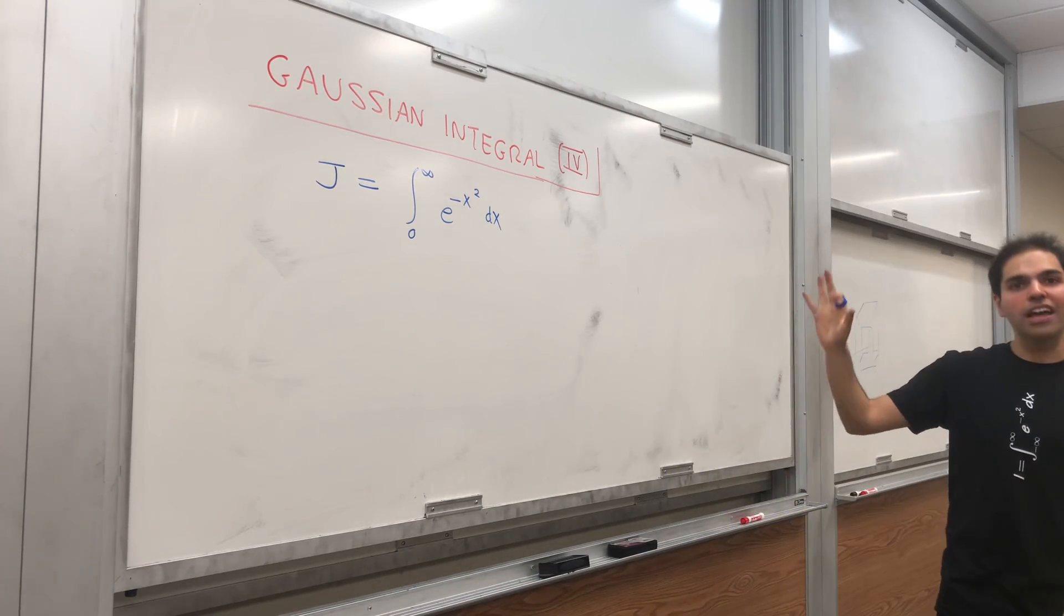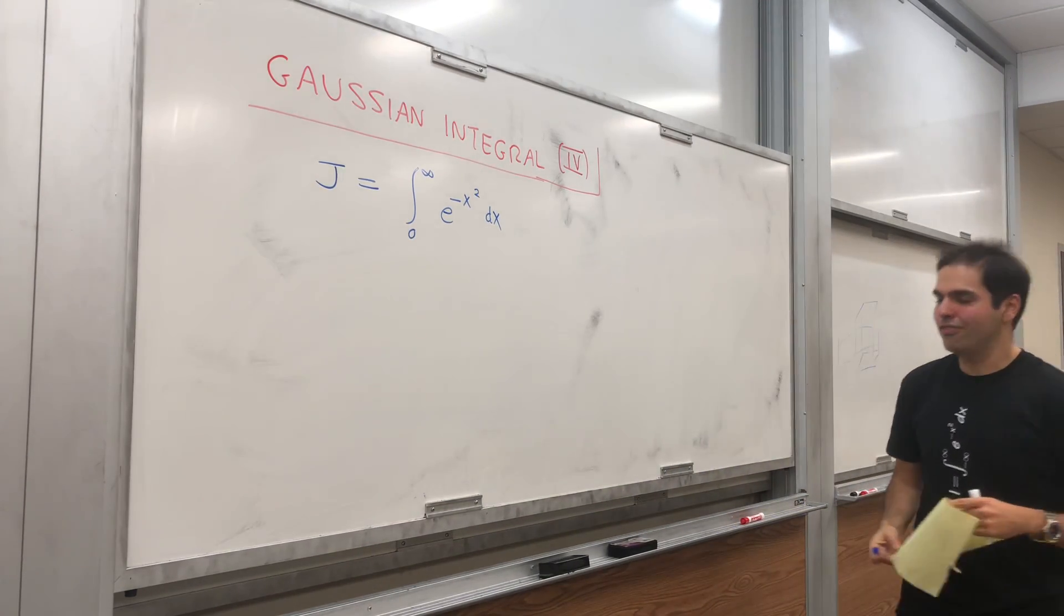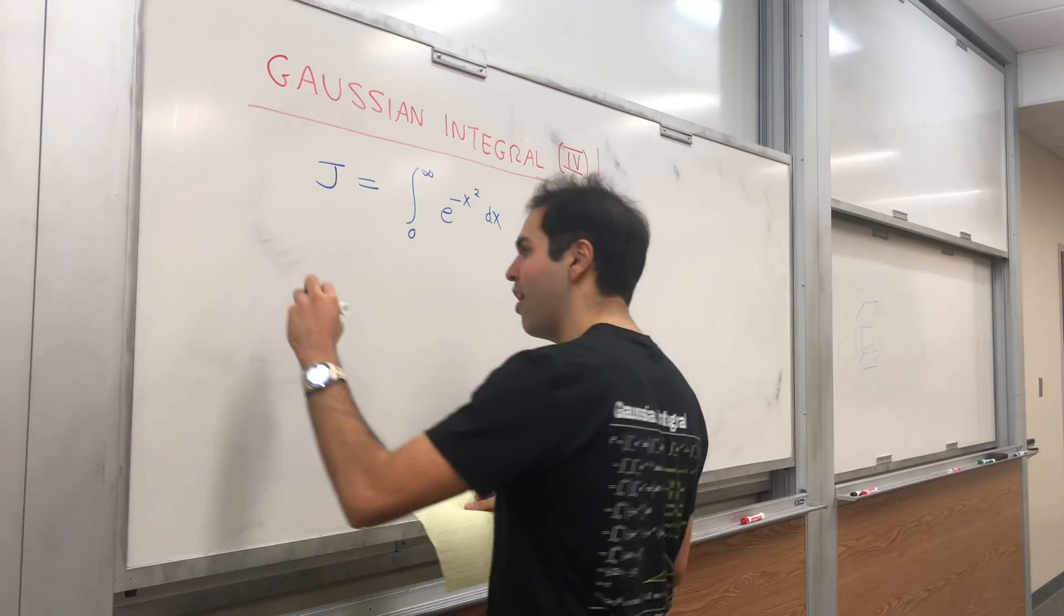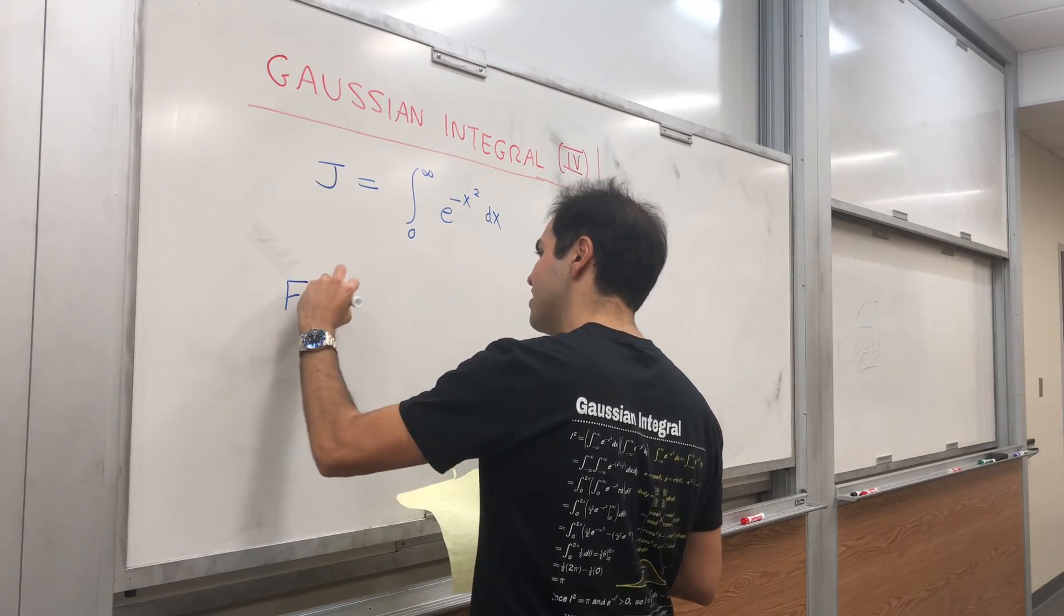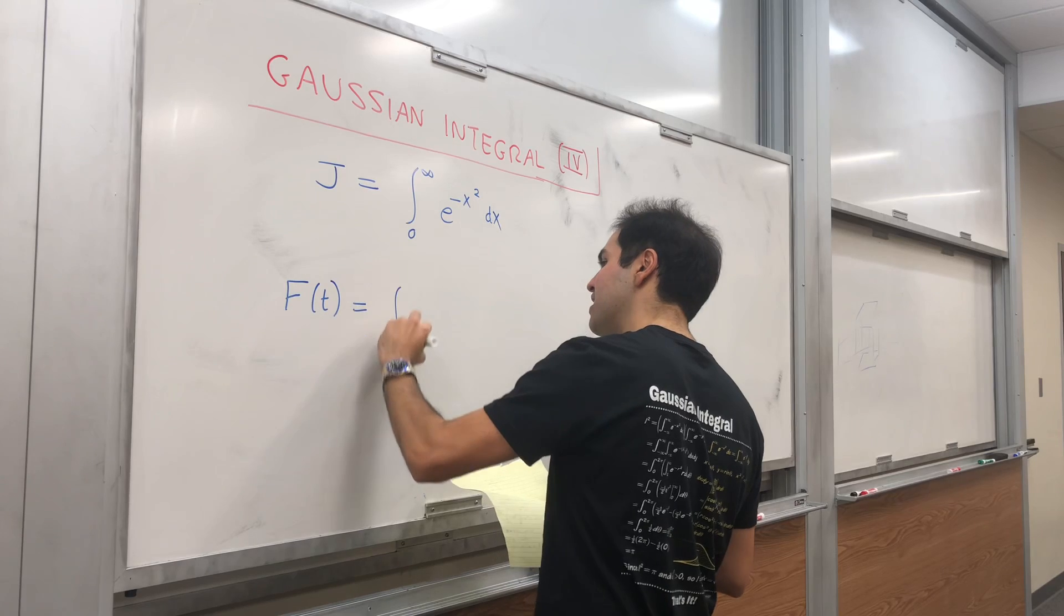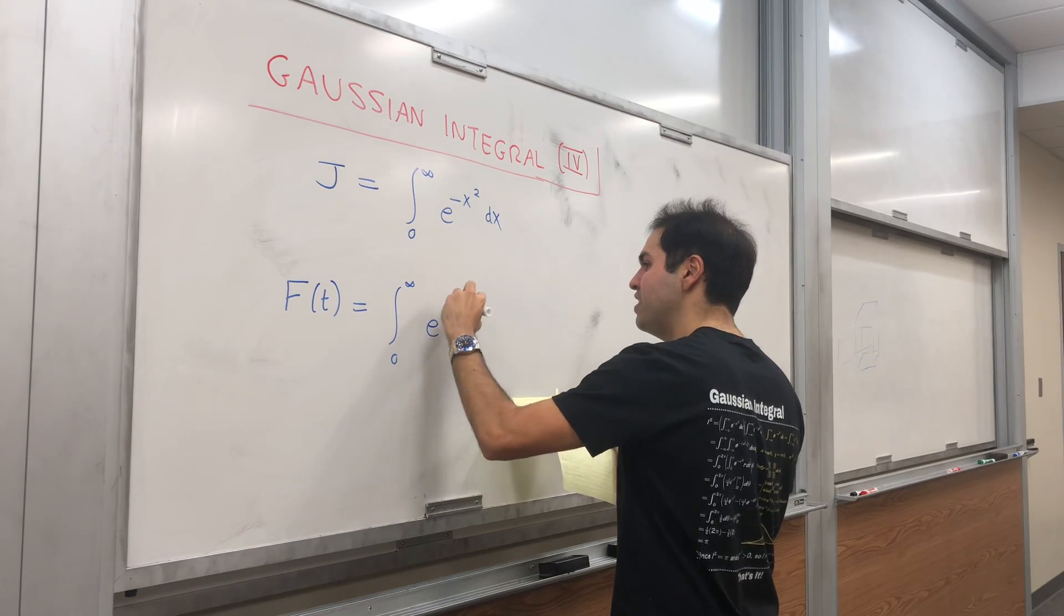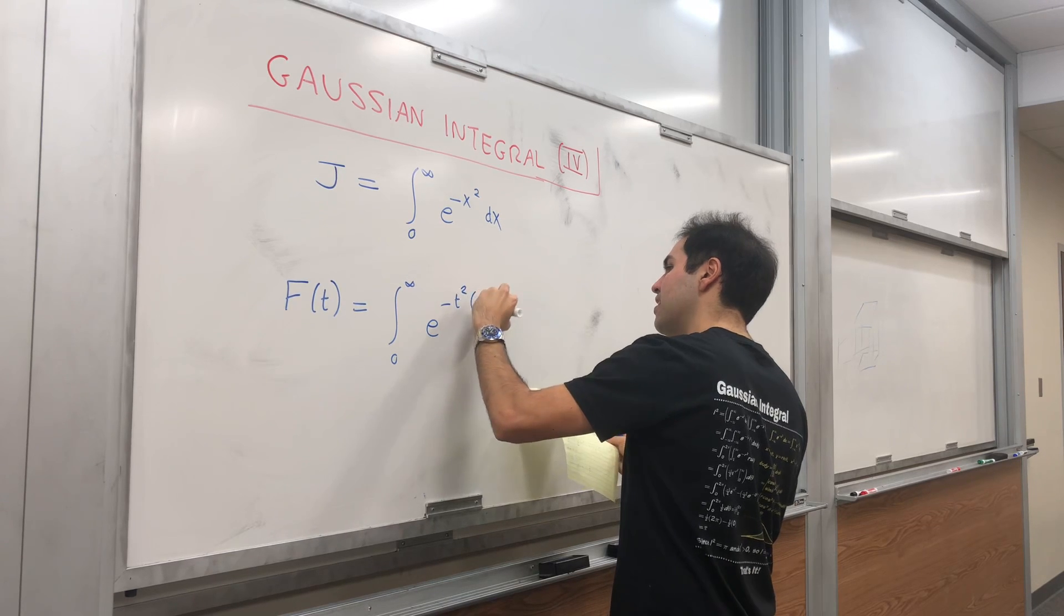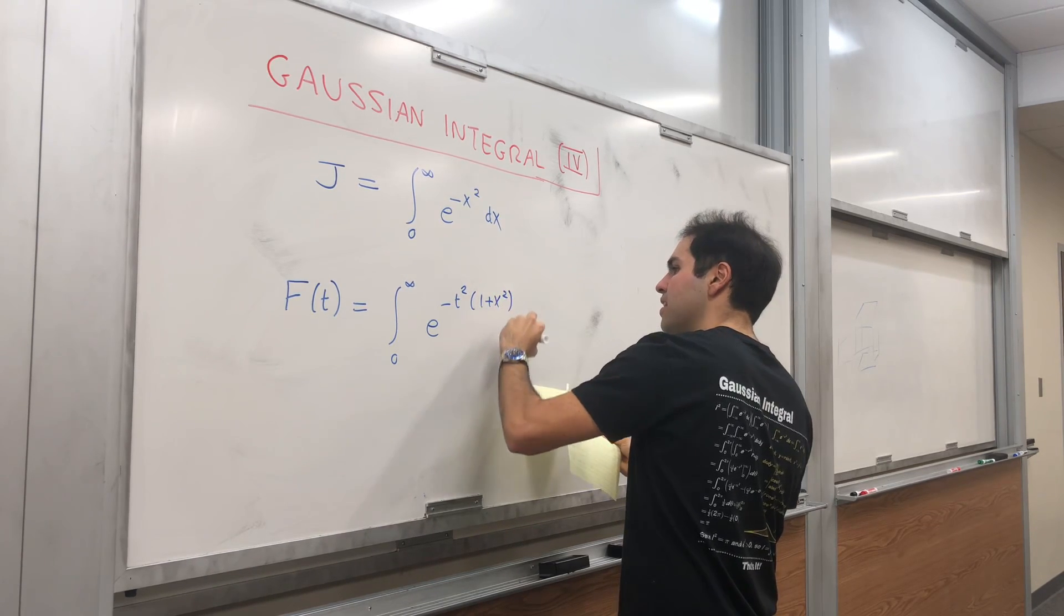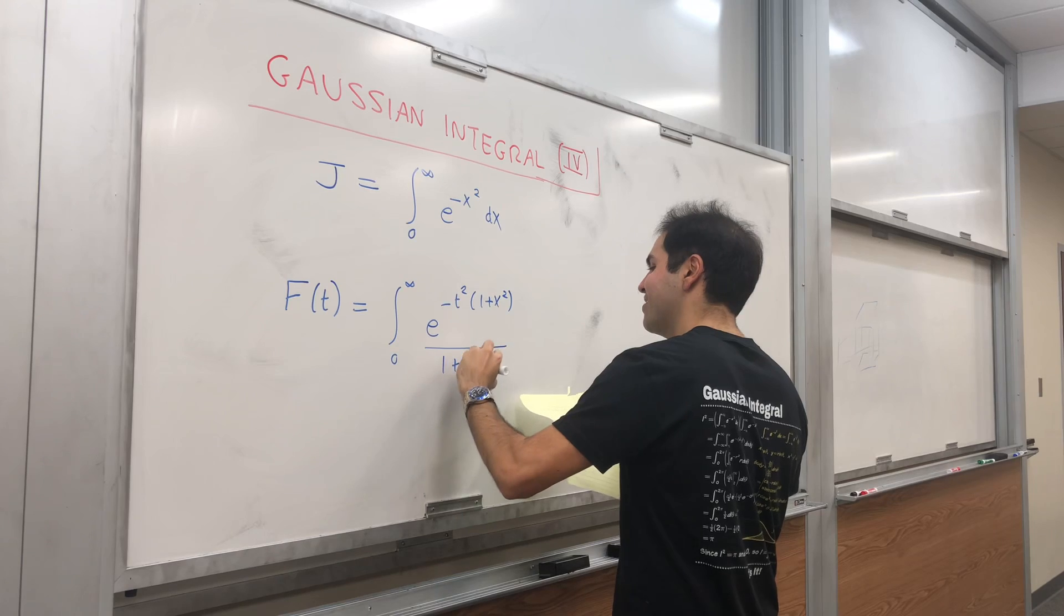And this time we would like to consider some auxiliary function. So consider the following function, which depends on t. F of t is equal to integral from zero to infinity of e of minus t squared times 1 plus x squared over 1 plus x squared dx.